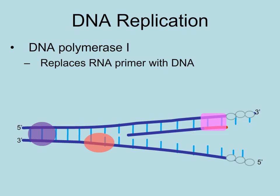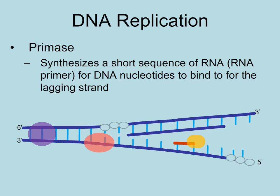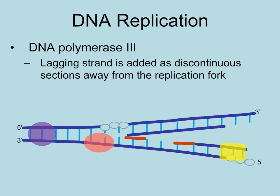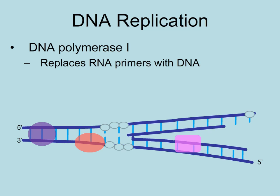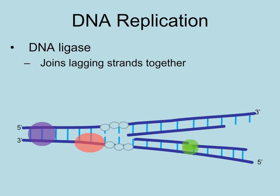One new strand has been added, but the other strand must be added differently. Again, primase adds the primer, and DNA polymerase III adds the DNA nucleotides, but it cannot add them toward the replication fork — it can only add in a 5' to 3' direction, so it adds them away from the replication fork. That means this strand, called the lagging strand, must be added in segments. These segments are called Okazaki fragments. DNA polymerase I replaces the primers with DNA nucleotides, and an enzyme called ligase joins the Okazaki fragments together by forming phosphodiester bonds to connect the sugar-phosphate backbones.